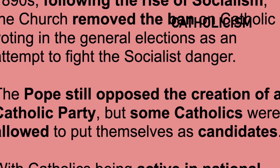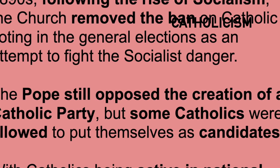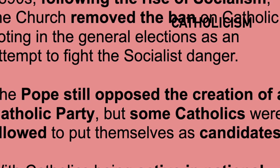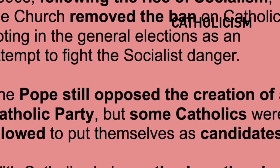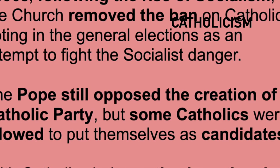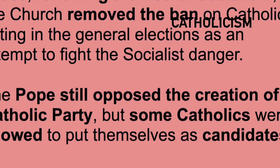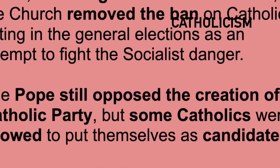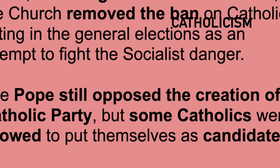However, tensions between the state and the Church still remained, so much so that the Pope refused to allow the creation of a Catholic party to participate in the political system. What is interesting is that the Pope did allow some Catholics to put themselves forward as independent candidates, hoping this would bring some Catholic policies to the Italian government. Yet this was no easy situation for the liberals, because even though Catholicism and liberalism agreed that socialism was a negative thing, they were at odds on equally as many issues, meaning the liberals had yet another imminent threat to contend with.